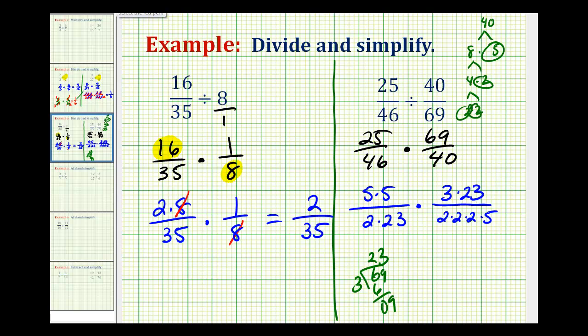And now we can simplify. So here we have a 5 over 5, that simplifies to 1. Here we have a 23 over 23, that simplifies to 1, and it looks like that's it.